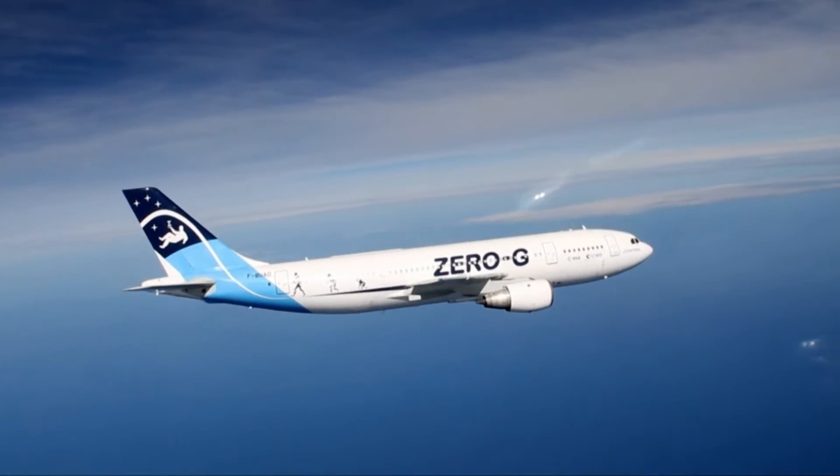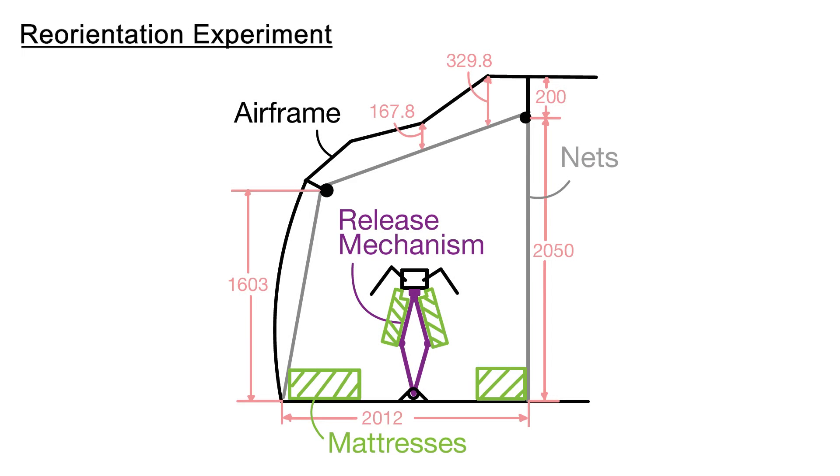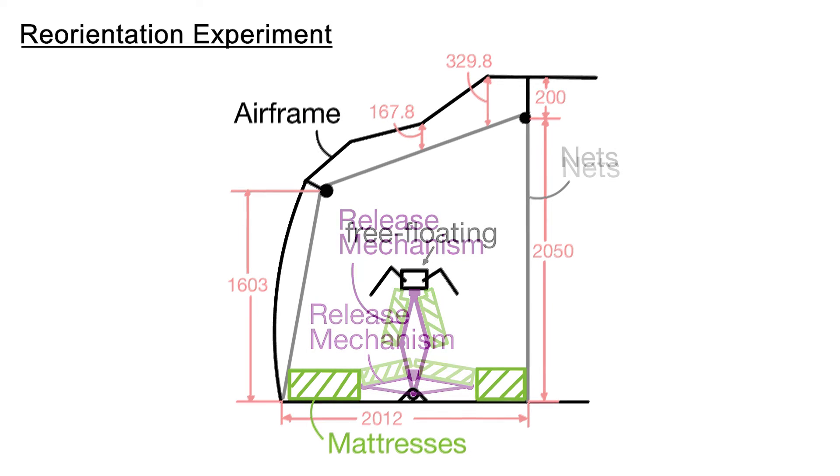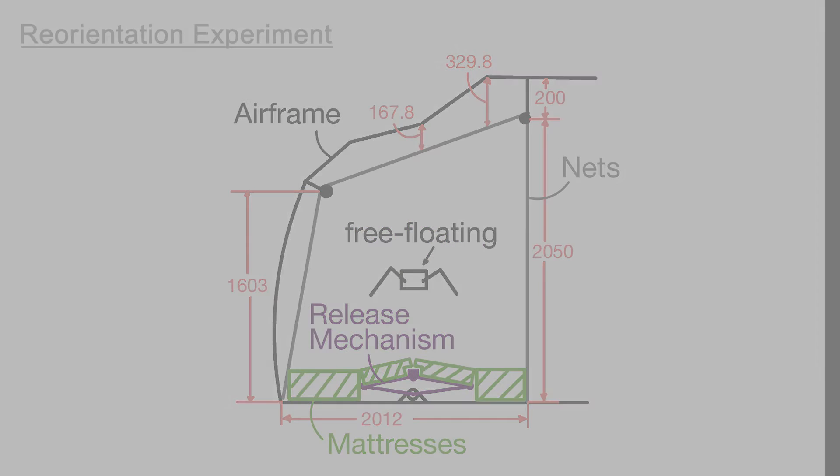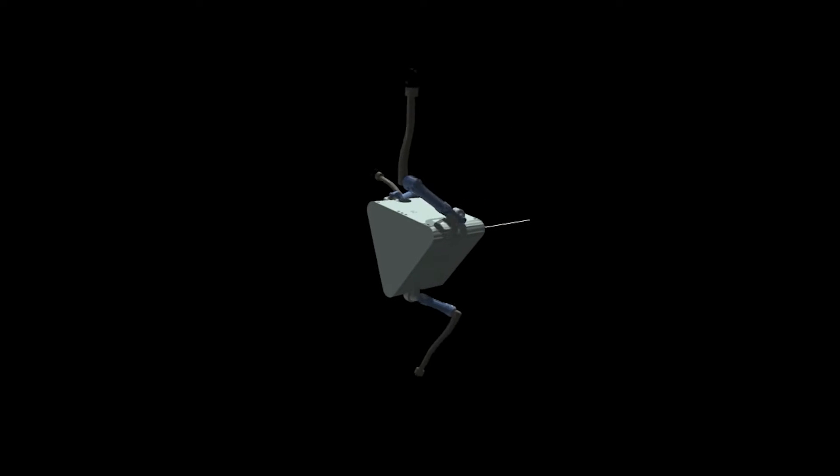We propose two experiments. A reorientation experiment with the free-floating Spacehopper in a contained space. A release mechanism holds the robot during hypergravity phases and releases it at the beginning of every parabola. From simulations, we expect Spacehopper to be able to reorient to a desired position in under one second.